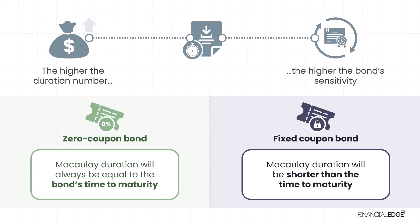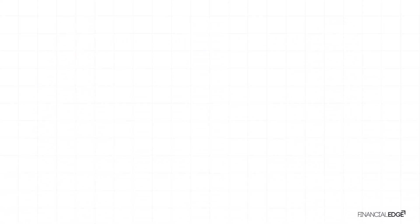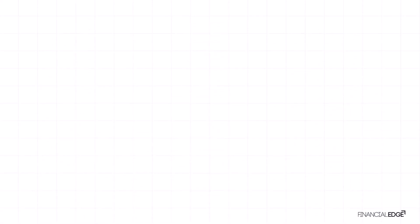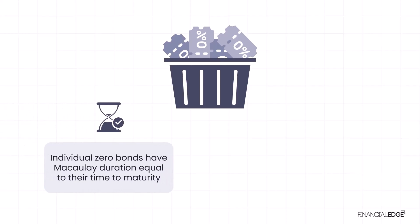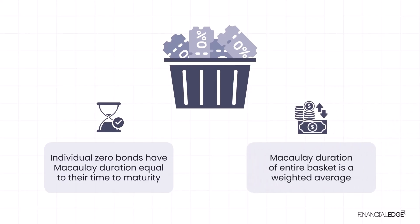The higher the coupon, the larger the portion that is repaid earlier, and thus the shorter the Macaulay duration. You can think of a fixed coupon bond as a basket of zero coupon bonds, each with different maturities. Each zero coupon bond in this basket will have a Macaulay duration equal to its time to maturity. The Macaulay duration of the entire basket is simply the weighted average of the individual zero coupon bond durations, based on the proportion of each cash flow relative to the bond as a whole.